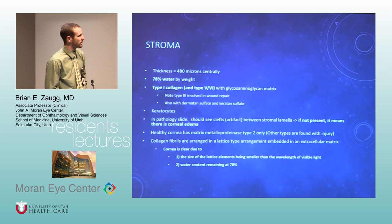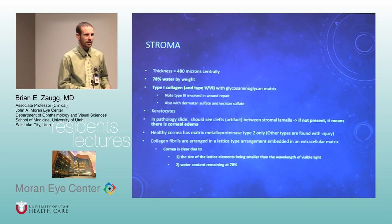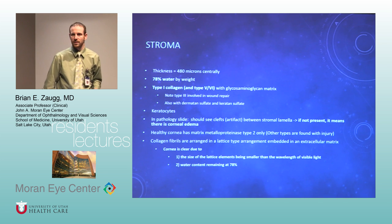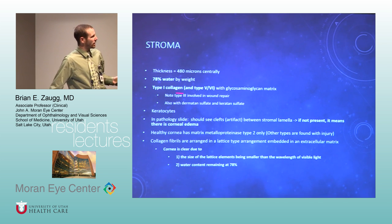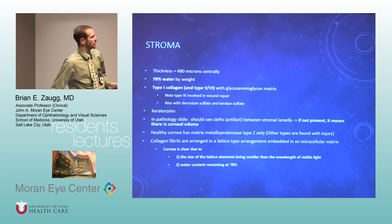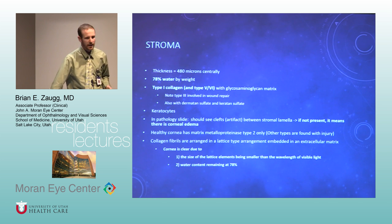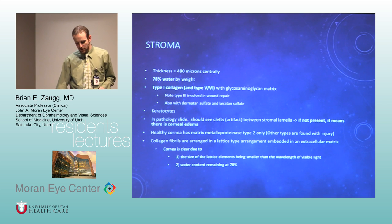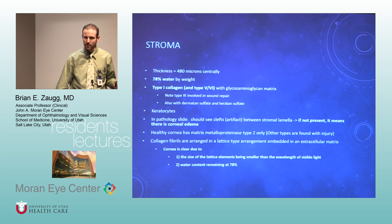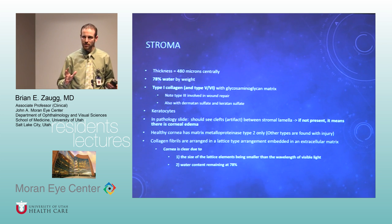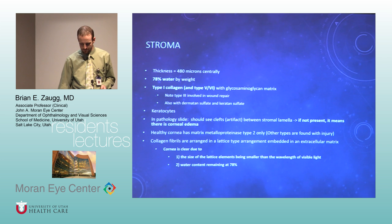The stroma is about 480 microns thick and is mostly water. If water content exceeds about 78–80%, it starts to get opaque and thicken. Type 1 collagen is mostly present, with type 3 involved in wound repair — they like to ask those questions. Keratocytes turn into scar-forming cells and lay down type 3 collagen. On pathology slides, a cornea without clefts in the stroma means it's actually swollen — compact-looking collagen indicates a swollen cornea.